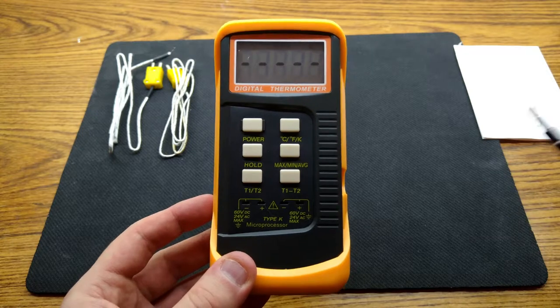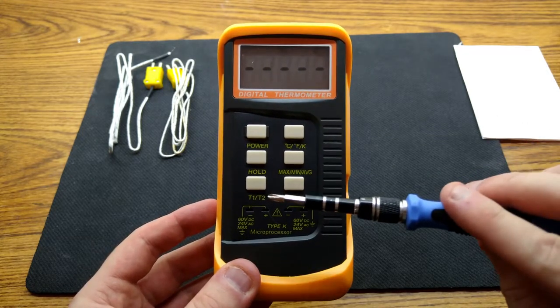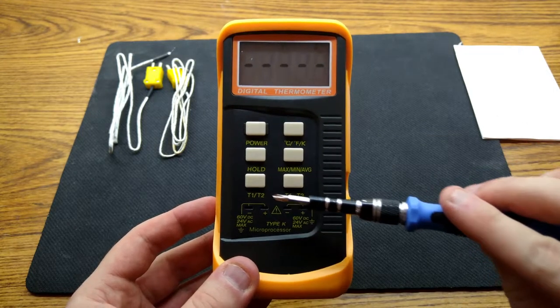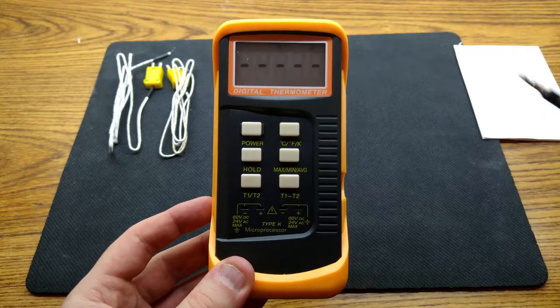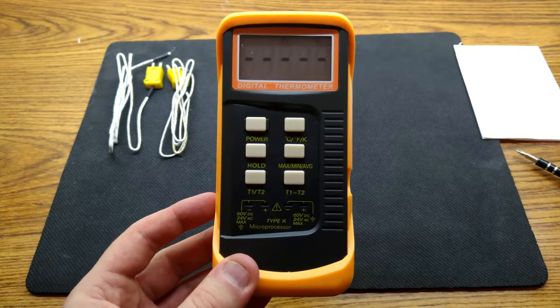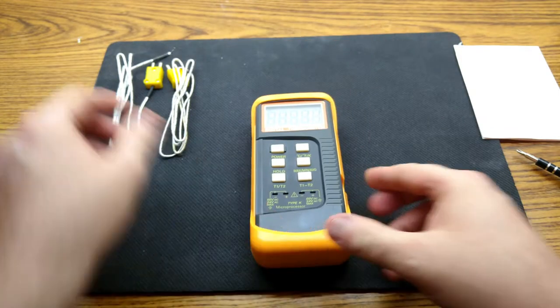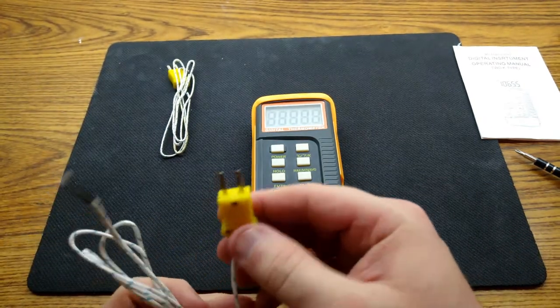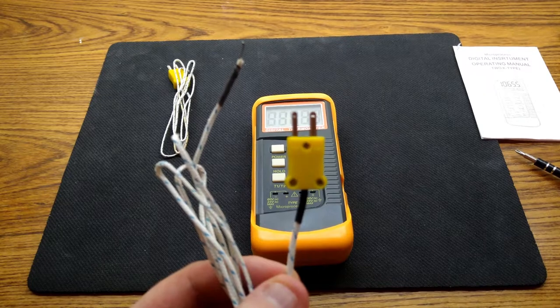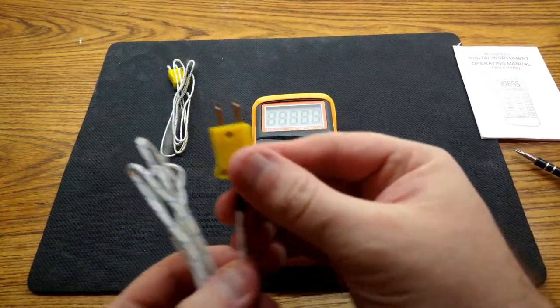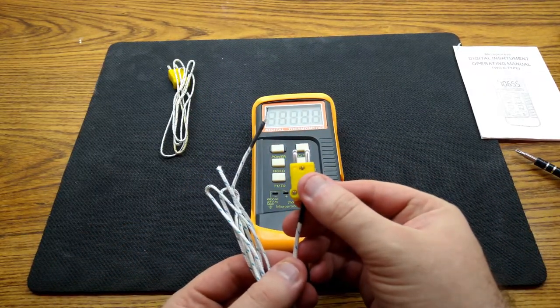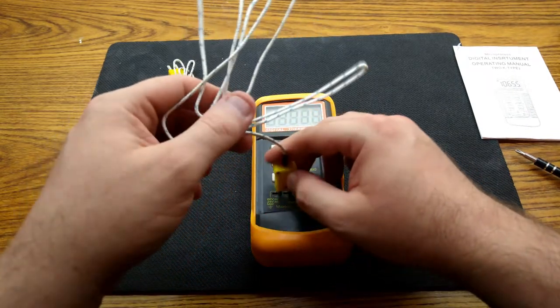Although two thermocouples can be connected to the device at one time, only one can be viewed on the display. Alternatively, it can display the difference between them. It comes with two k-type thermocouple probes with markings for the positive and negative pins on the inputs, which I can't quite get in focus here, but it allows you to match up to the pins on the device.